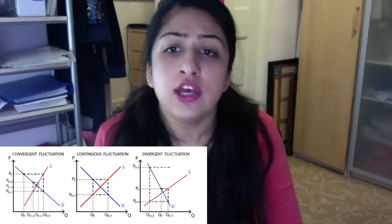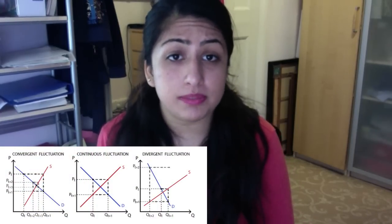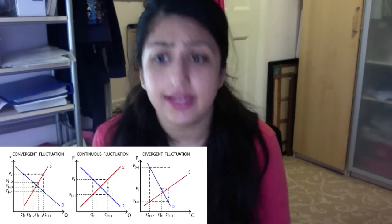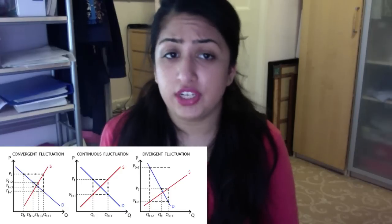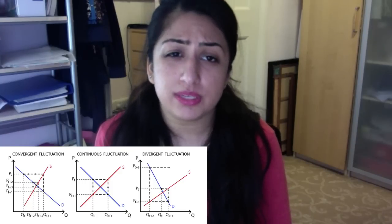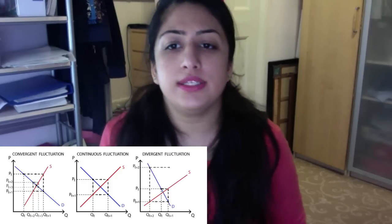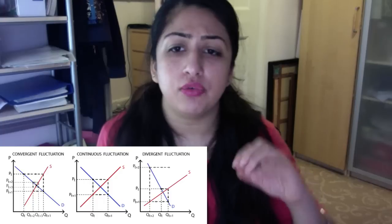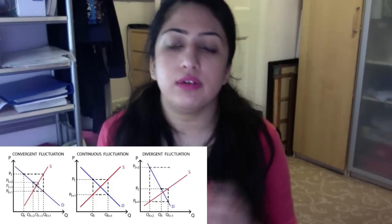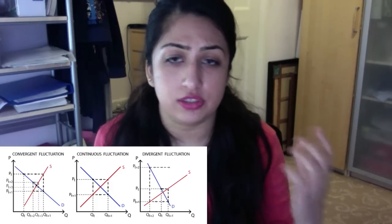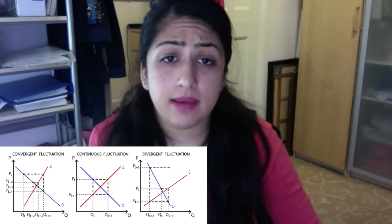There are three ways cobwebs can develop, which have specific names: convergent, divergent, and oscillating (sometimes called continuous). In a convergent cobweb, the price swings get smaller and smaller as you move towards equilibrium in the long run. In a divergent cobweb, the price swings get bigger and bigger, moving away from the central equilibrium. In an oscillating cobweb, the price swings remain equidistant — it just keeps going without converging or diverging.